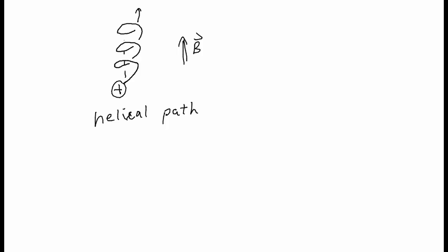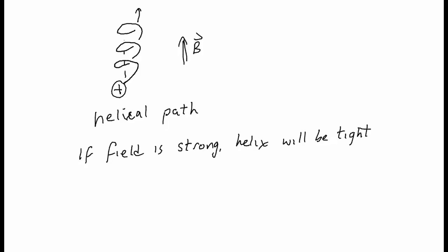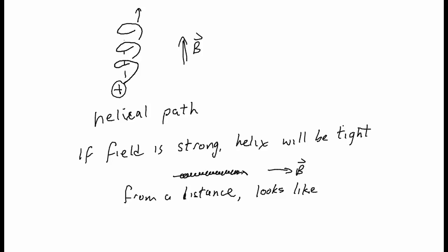Now the width of this helix depends on how strong the field is. If the field is strong, the helix will be tight — the radius will be very, very small — and it might look something like this. From a distance, assuming the magnetic field points to the right, it looks like the charge is moving along the field line.